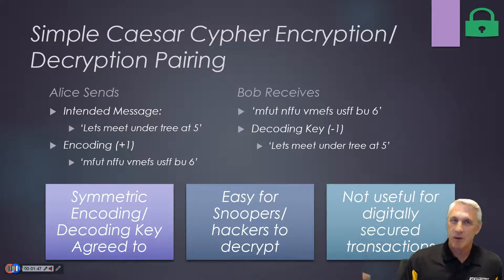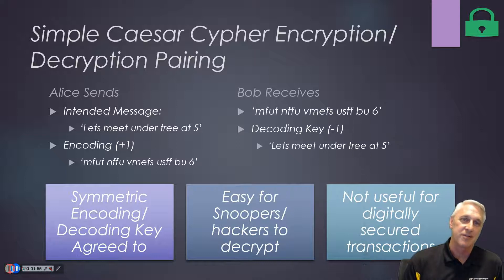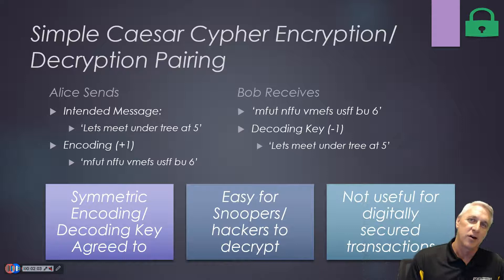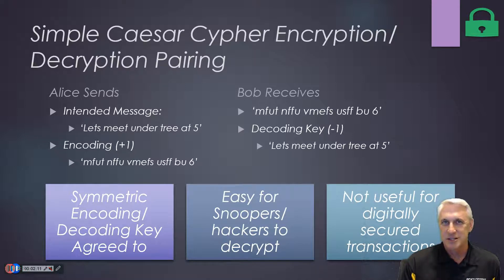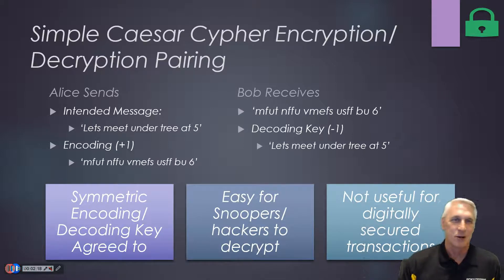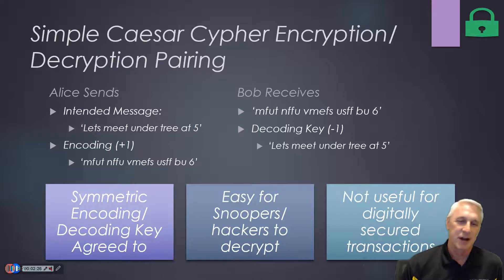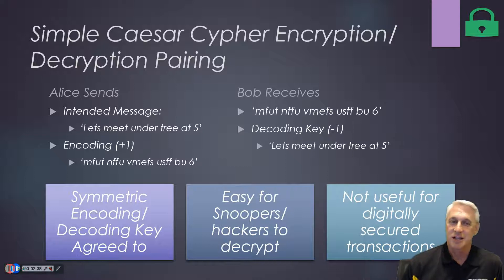One of the simplest kinds of cryptography or ciphers is the Caesar cipher. You encrypt by taking the alphabet and for every letter you shift one letter over, five letters over, or whatever — forward or backward. If you're shifting five letters to the right, whoever receives the message understands that key, so to decode they shift five letters to the left. Great for kids, but not useful on the internet — it's way too easy to break.